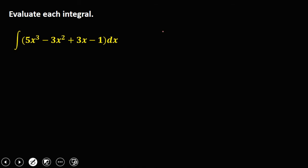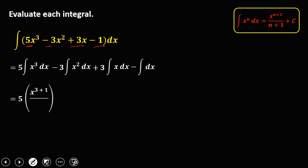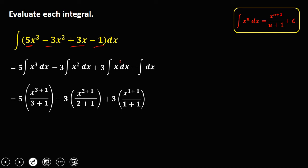For this given, we integrate every term and put constants outside the integral. For the first term, that's 5 times the integral of x to the power 3 dx. Then minus 3 times the integral of x squared dx. Then plus 3 times the integral of x dx. Then minus the integral of dx. Solving for each integral using the formula — adding 1 to the exponent — that's 5 times x to the power 4 over 4, minus 3 times x to the power 3 over 3, plus 3 times x to the power 2 over 2, then minus x, plus C.